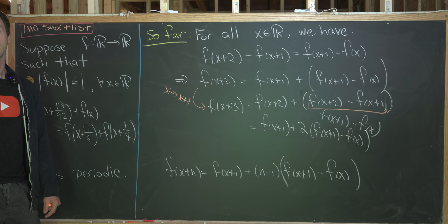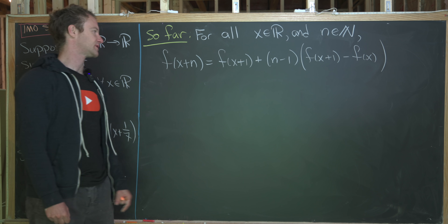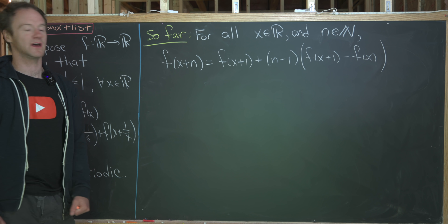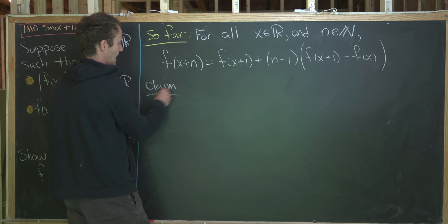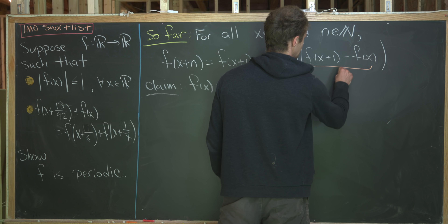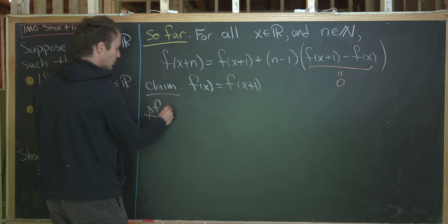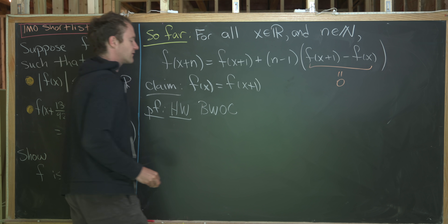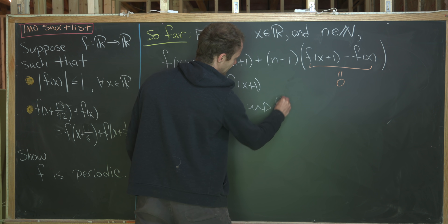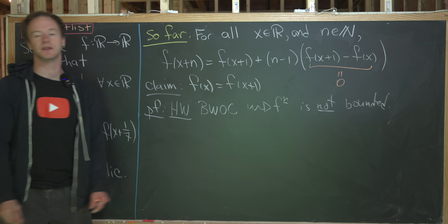We're almost done. For all real numbers x and natural numbers n, f(x+n) = f(x+1) + (n−1)·[f(x+1) − f(x)]. The claim is that f(x) = f(x+1), making f periodic. The proof is by contradiction: if f(x+1) ≠ f(x), then as n grows, f(x+n) grows without bound, contradicting our assumption that f is bounded. So f(x+1) = f(x) for all x, and the function is periodic.